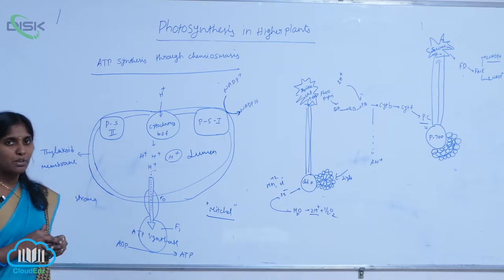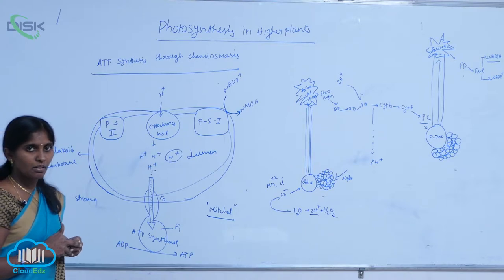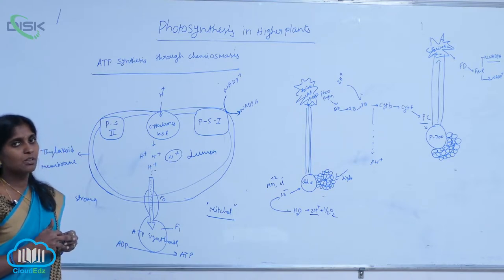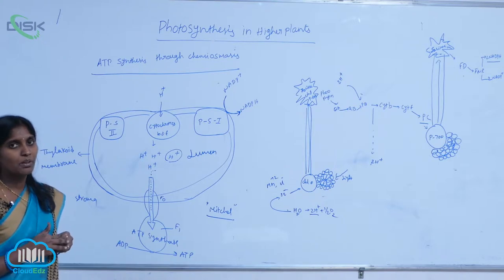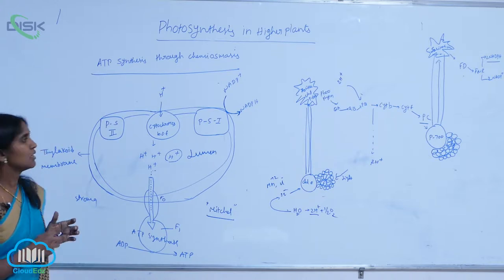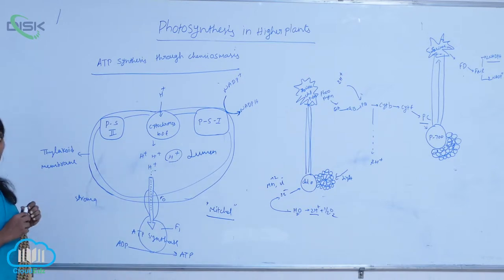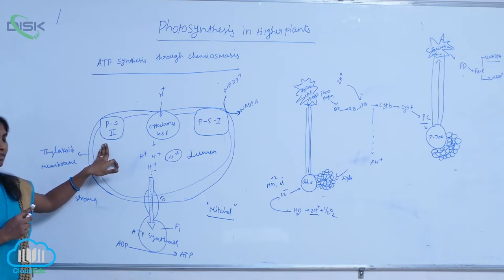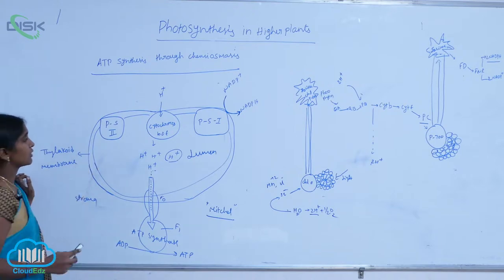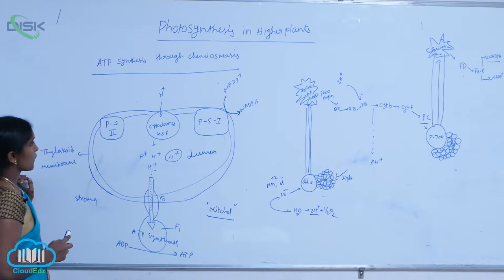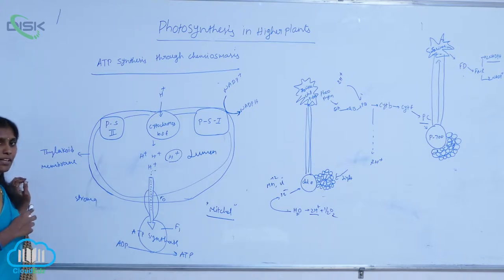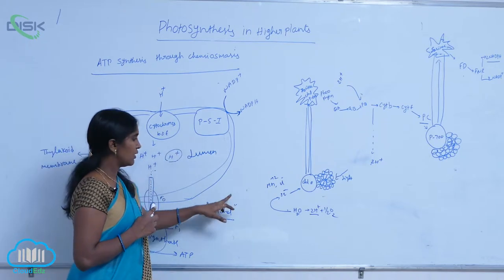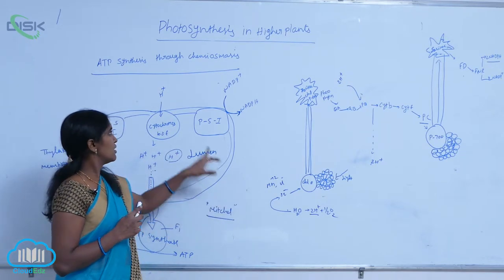In PS2 and PS1, electron transportation is carried out among the electron carriers, and proton translocation occurs into the lumen. The protons are accumulated more in the lumen. This happens because the protons are transmitted from stroma to lumen through the quinone cycle, and the available protons enter into the lumen.